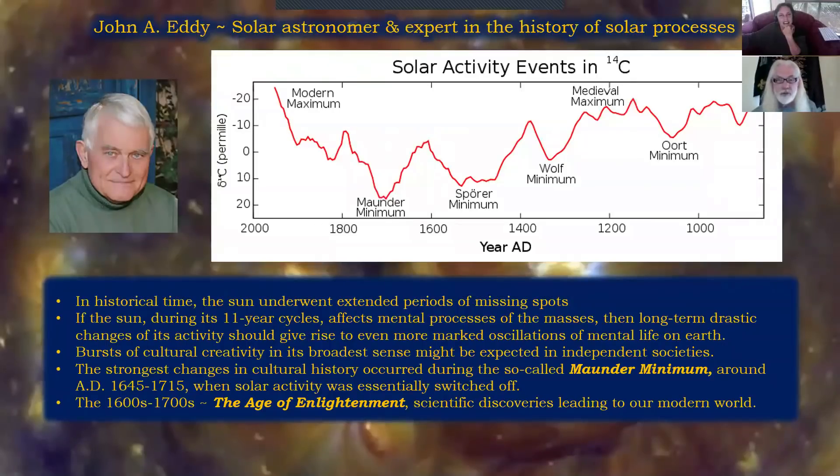Then we have John Eddy, solar astronomer, expert in the history of solar processes. In historical times, the sun underwent extended periods of missing spots, anomalous magnetic respite. The sun, during its 11-year cycles, affects mental processes. Long-term drastic changes could give rise to even more marked oscillations of mental life on Earth. The strongest changes in cultural history occurred during the Maunder Minimum, around AD 1645 to 1750, when solar activity was essentially switched off. The 1600s to 1700s was the Age of Enlightenment, scientific discoveries leading to our modern world. The Sporer minimum was pretty much the Renaissance.